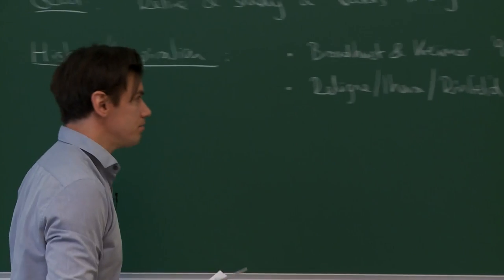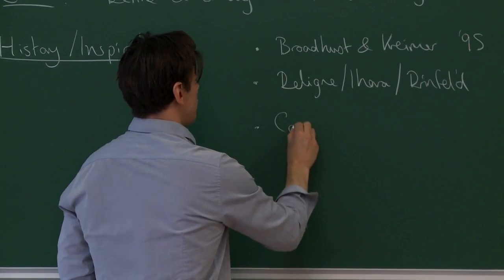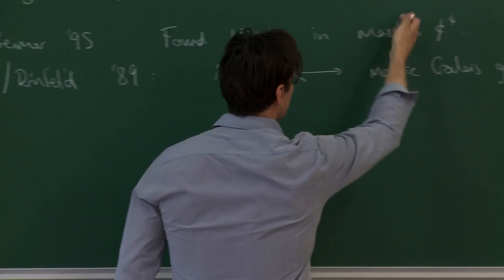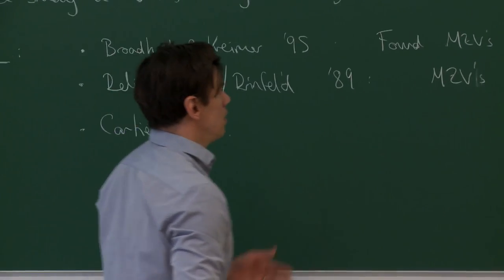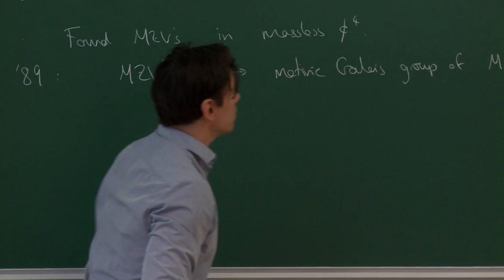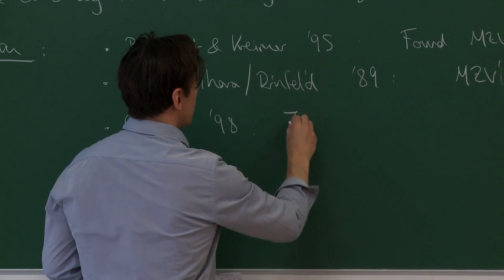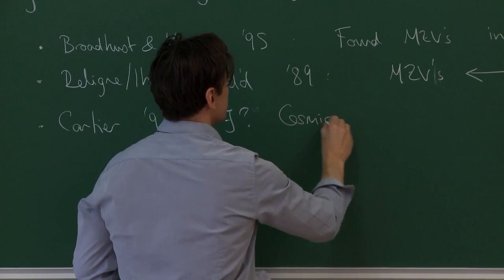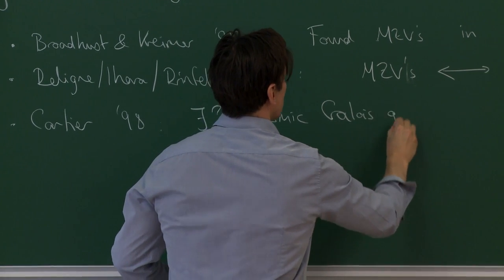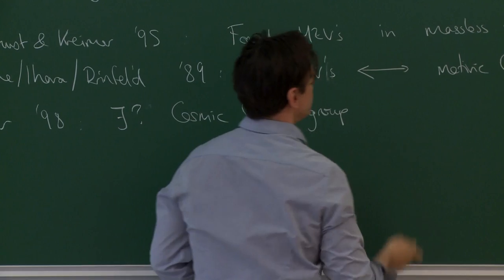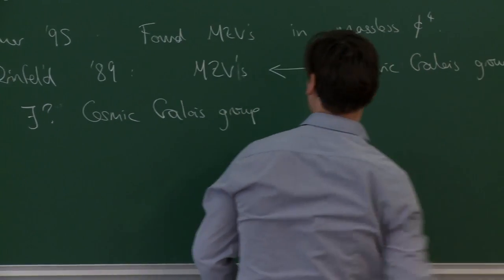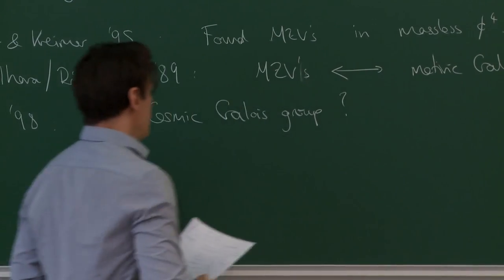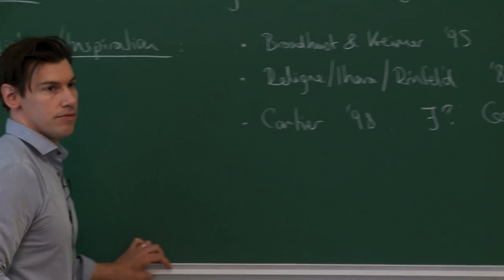All that was conjectural at that time. So what happened next is that Cartier, in around 1998, said: we have amplitudes in physics related to numbers in mathematics that are related to some motivic Galois group. Could there be — and he coined the term — a cosmic Galois group that somehow acts on these amplitudes and corresponds to this group underlying the structure of multiple zeta values? He made some vague statements, but he invented the word cosmic Galois group.